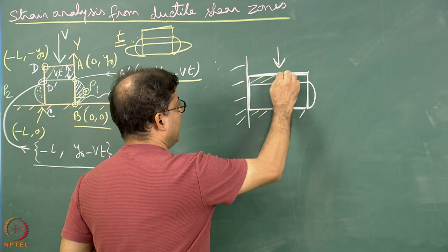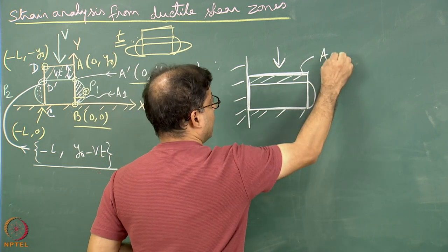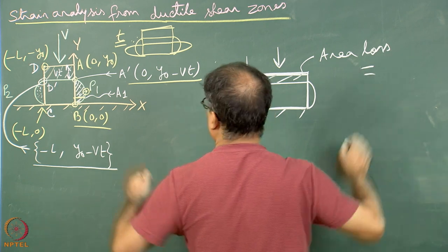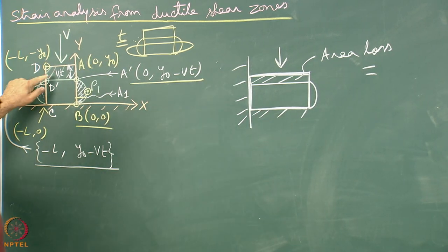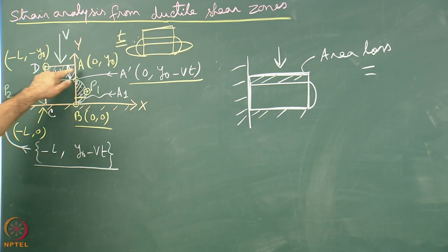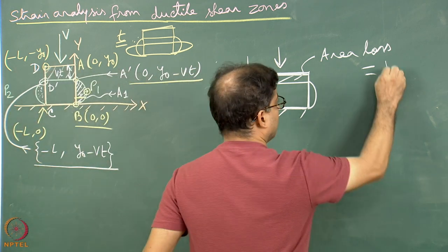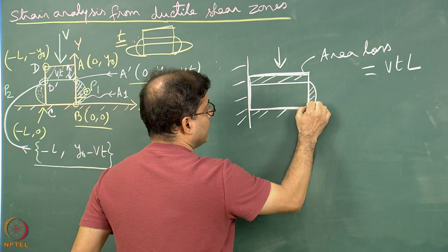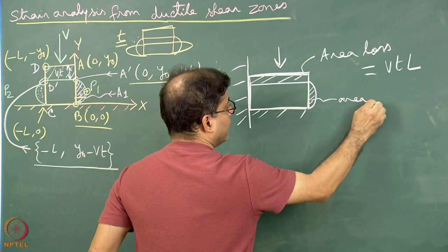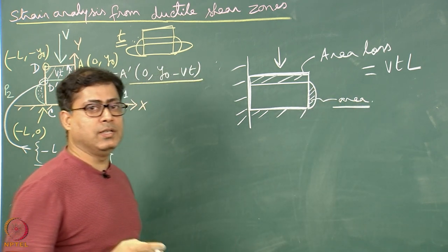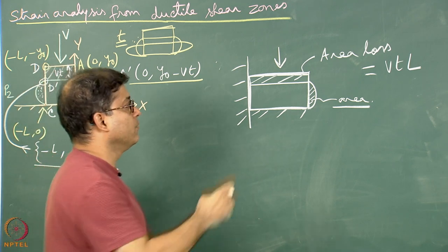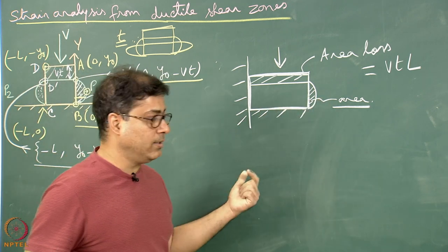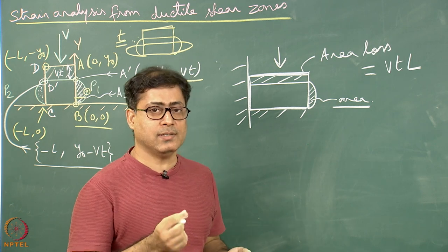In that case, you can look at this diagram. The area loss is Vt multiplied by L, which will be equal to this area. So we will not do VtL divided by 2 — rather, simply VtL equals this area. In this way, the deduction that was done will undergo a slight change.